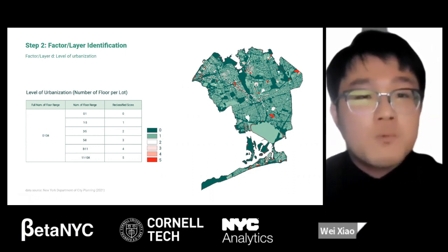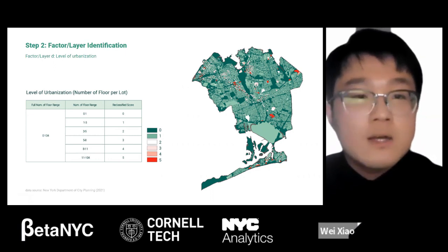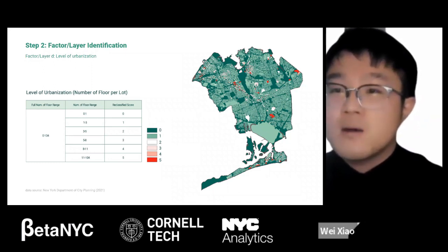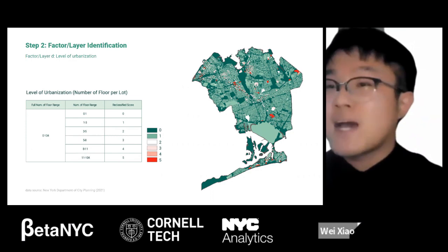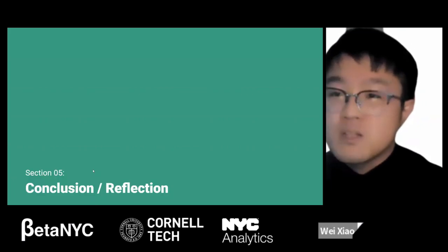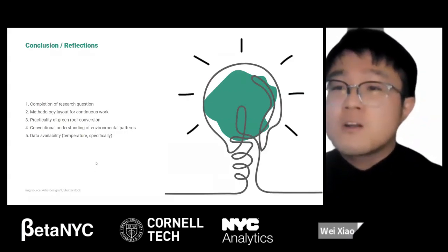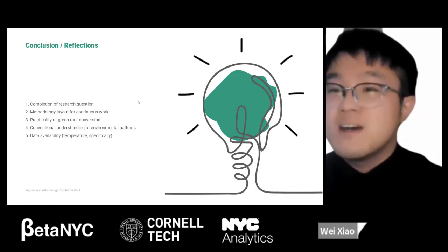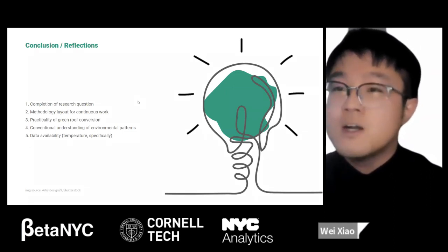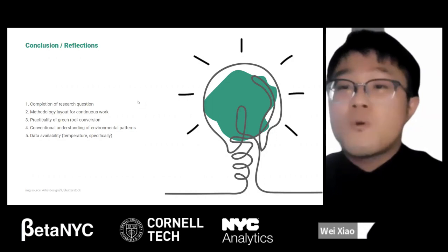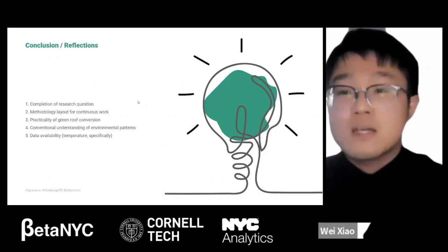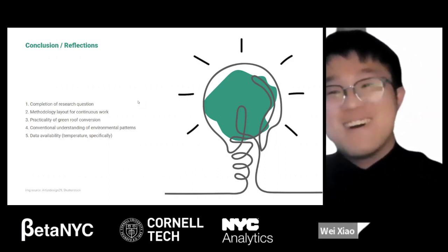Regarding whether we considered publishing the full list of potential sites as open data: we currently have all available roof spaces in Queens as a finalized data layer. However, one of the limitations is the practicality of green roof conversion — many roof spaces appear feasible from two-dimensional satellite images, but when examining Google Street View or the buildings themselves, we are not certain about the structural capacity to support a green roof system. We still need more work on this dataset, but it is a great idea to make it available for the general public once produced.